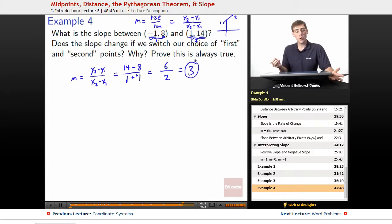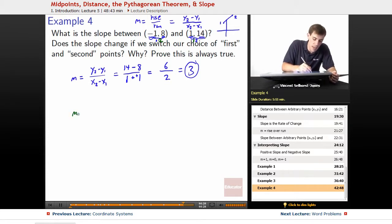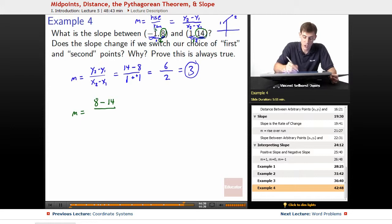What is the slope going to be if we switch our first and second points? Instead, we make this guy 1 and we make this guy 2. Well, we do the same thing. M equals, so it's going to be our new second guy is 8 minus our first guy is 14, divided by x2, our new second guy is negative 1 minus our new first guy is 1.